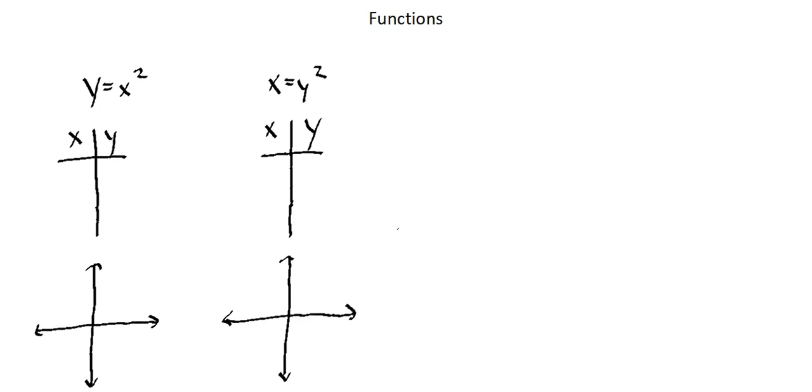So starting with y equals x squared, we can input values for x and produce outputs for y. Let's do three outputs for x starting with zero and x squared is zero. Our input is zero, our output is zero.